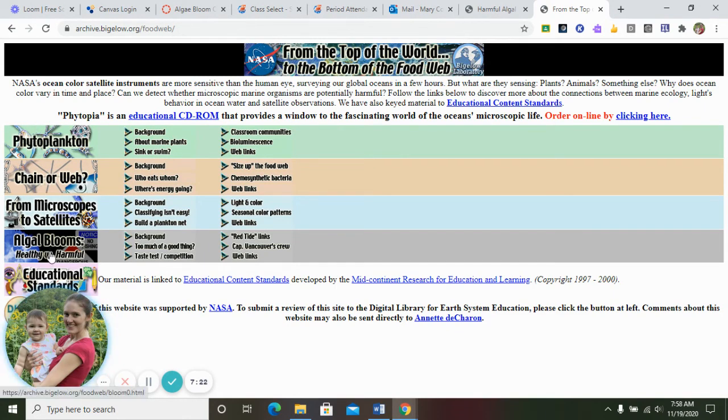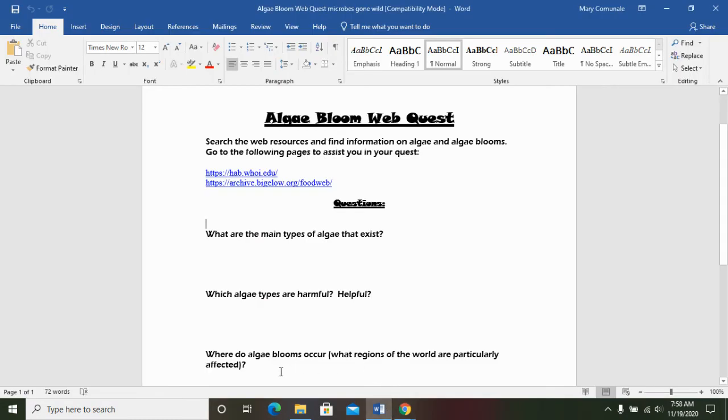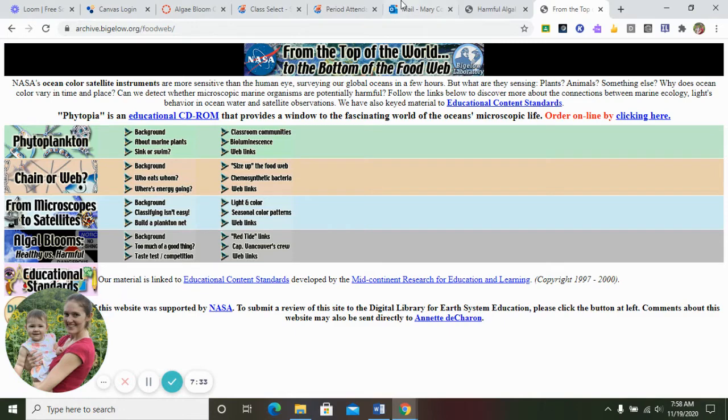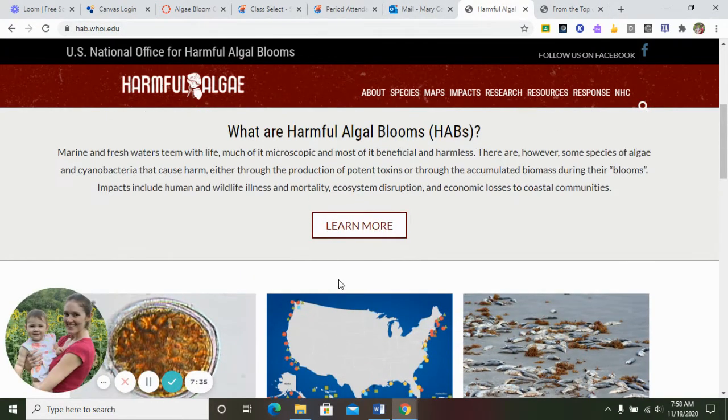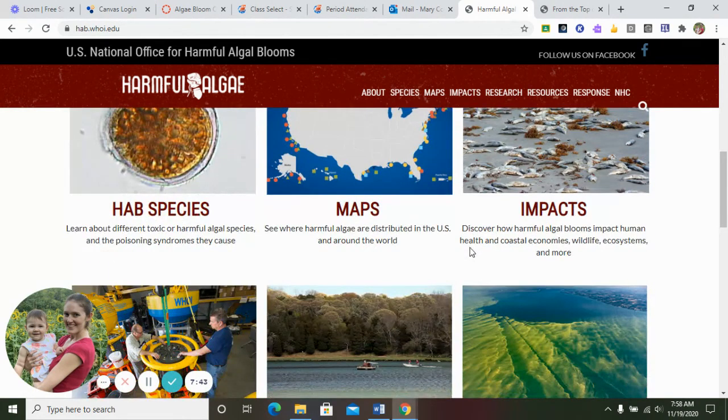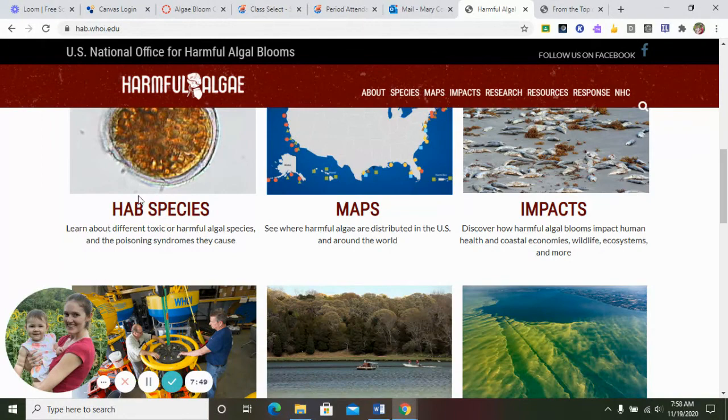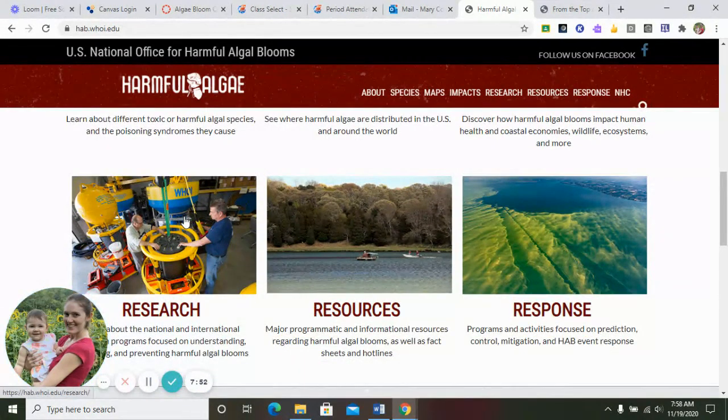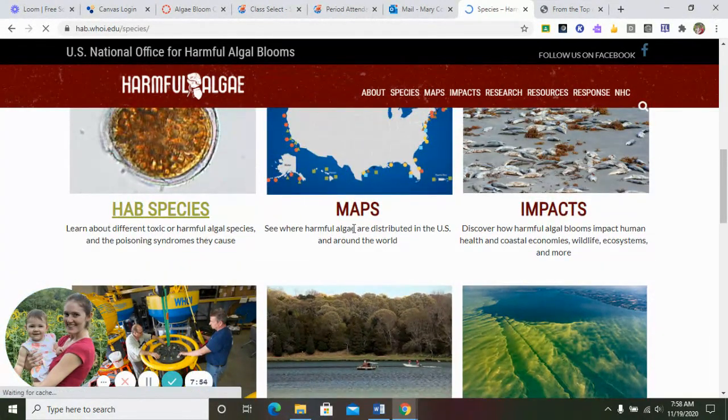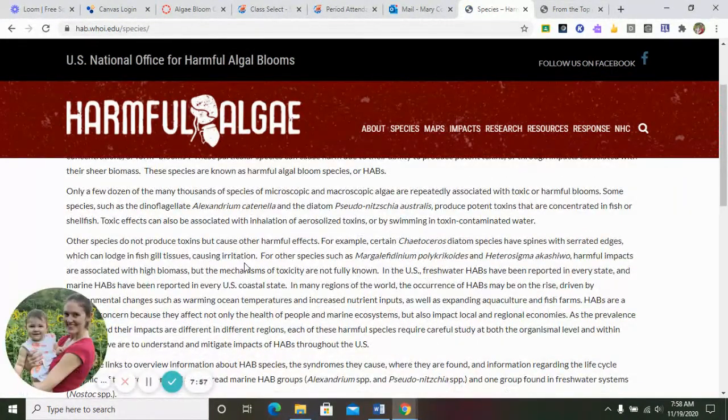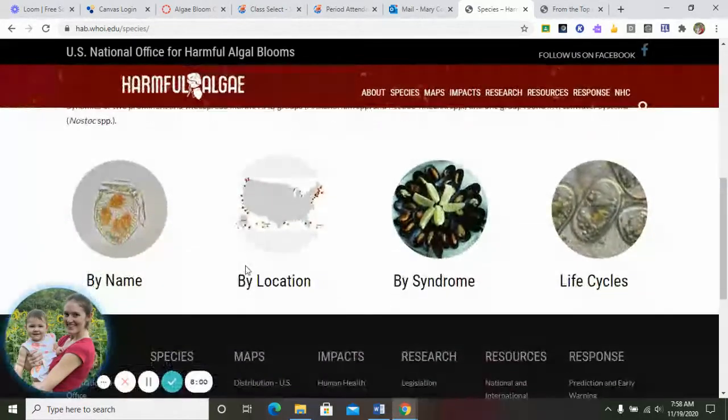And it has different sections down here on the side. You're probably going to want to look at the Algae Blooms one. So what are the main types of algae that exist? So you could look over here about the different species of algae and read through here and tell me a couple of those.